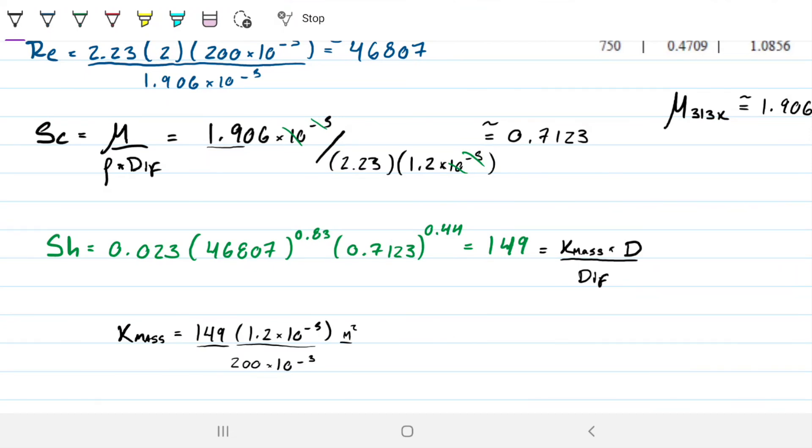There's no units for Sherwood. This is meter squared per second. And on the bottom we have meters in the diameter. So this is just going to be meters per second. This is 8.94 times 10 to the minus 3 meters per second. And that is our mass transfer coefficient, which is what the problem is asking us to find.